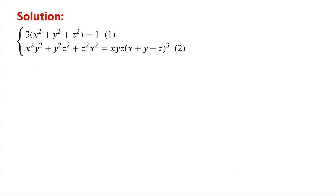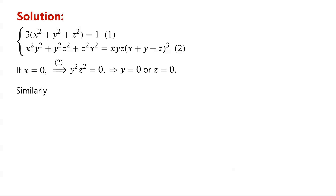How about one of x, y, and z equals zero? If x equals zero, then from equation two, we know that y squared z squared equals zero. So either y equals zero or z equals zero. Similarly, if y equals zero, then from equation two, we know that z squared x squared equals zero. So either z equals zero or x equals zero.